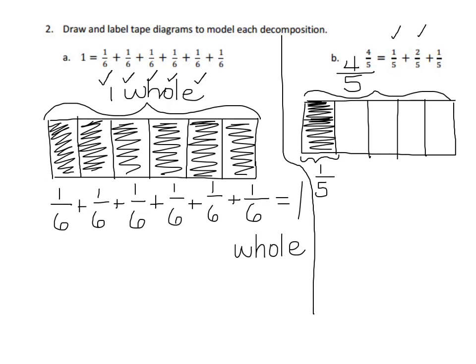And then my next addend is 2 fifths. So I need to shade in 2 of the 5 equal pieces. And I'm going to do a bracket to show that these 2 fifths are represented here. Don't forget, we're adding.